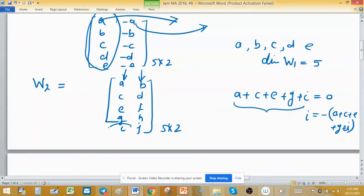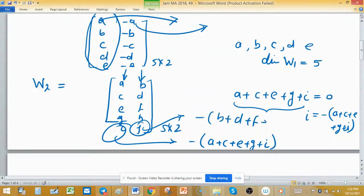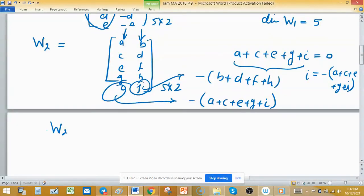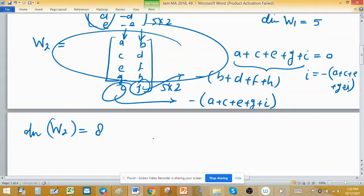This element I can write negative of A plus C plus E plus G plus I. Or in other words, you can say negative of sum of other four top elements. Similarly, this entry will be negative of B plus D plus F plus H. So dimension of this vector space W2 equals 8, because the circular part entries will contribute in dimension and these are independent choices.